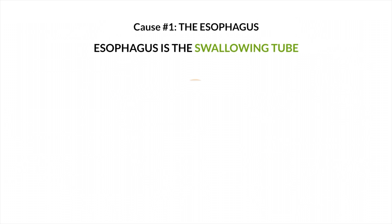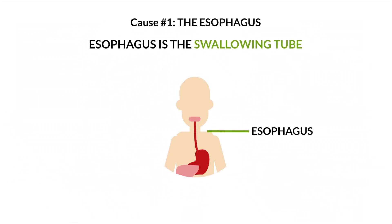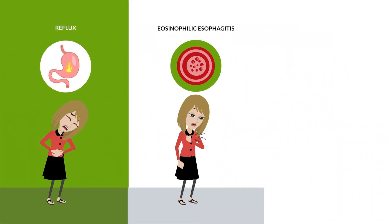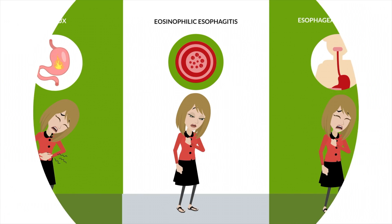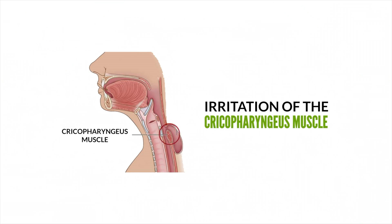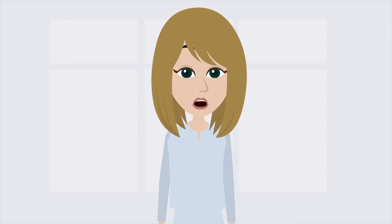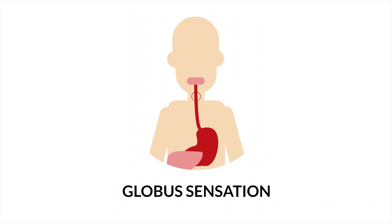The esophagus is the swallowing tube that connects the mouth and throat to the stomach. Reflux, eosinophilic esophagitis, and other forms of esophageal dysmotility can cause persistent Globus sensation due to irritation of the cricopharyngeus muscle which is located just below the voice box. When this muscle becomes tight, a patient experiences the Globus sensation.